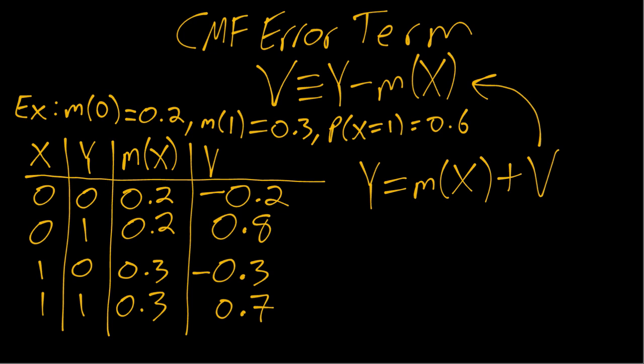And what that assumption, we do some math that's in the book but I won't do here. What that assumption does is it ensures that the mean of v given any possible x is equal to 0. So we could also write it out that way.